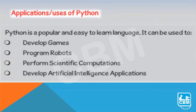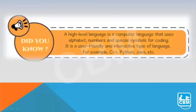Python has many applications. It can be used to develop games and robots. It can also be used to develop AI applications, perform scientific computations and many other different applications. Python is a high-level programming language that uses alphabets, numbers and special symbols for coding. It is very user friendly and is an interactive type of language.